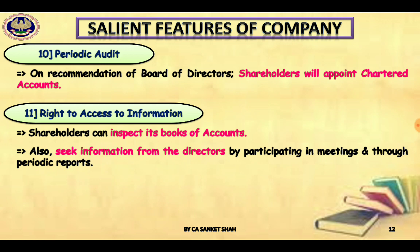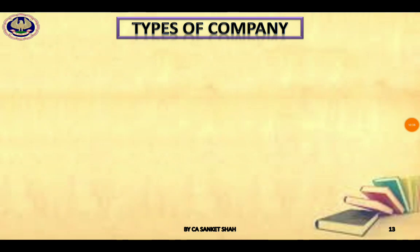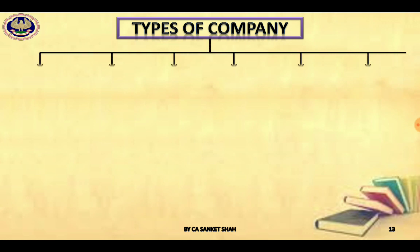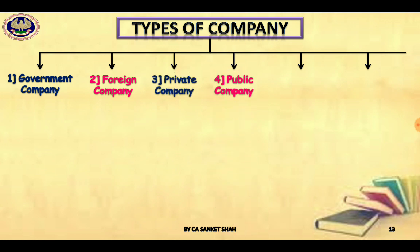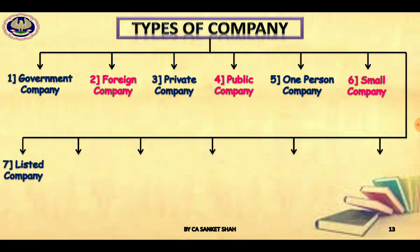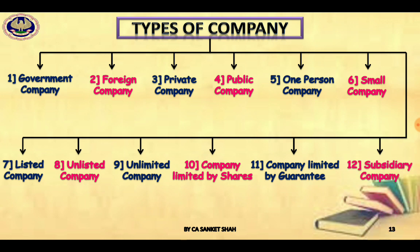Now we will understand all types of companies. Types of companies are basically divided into twelve parts: government company, foreign company, private company, public company, one person company, small company, listed company, unlisted company, unlimited company, company limited by shares, company limited by guarantee, and subsidiary company.